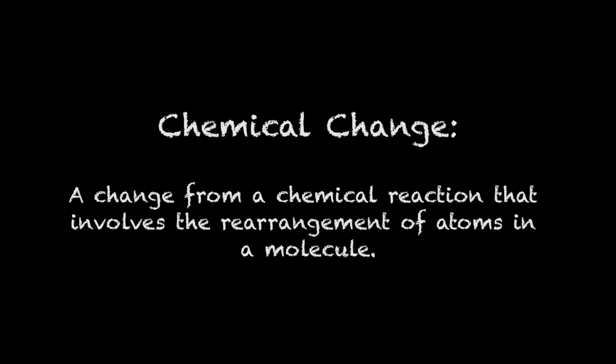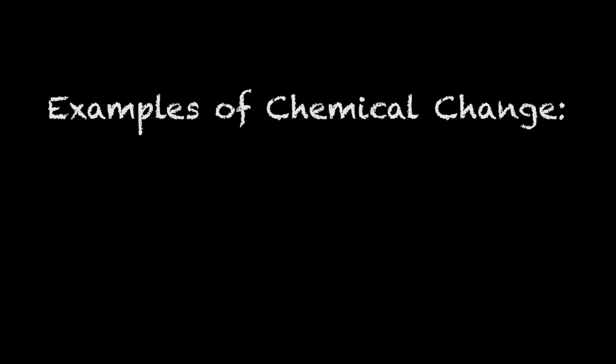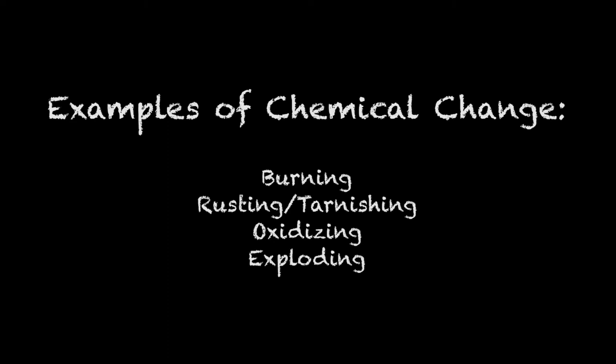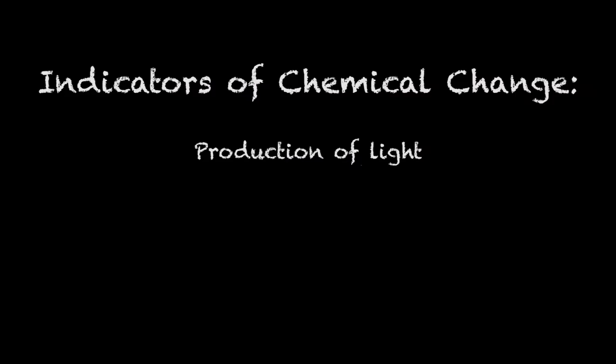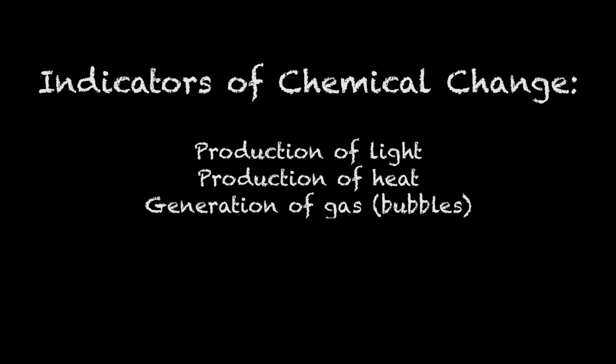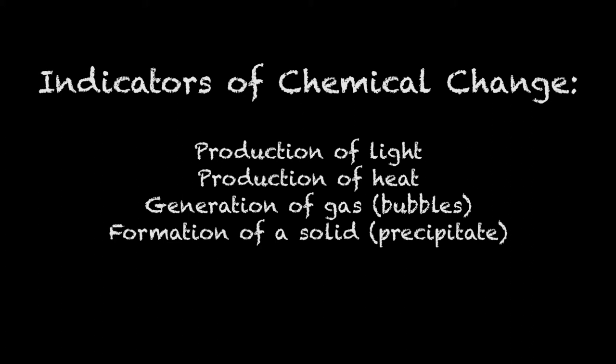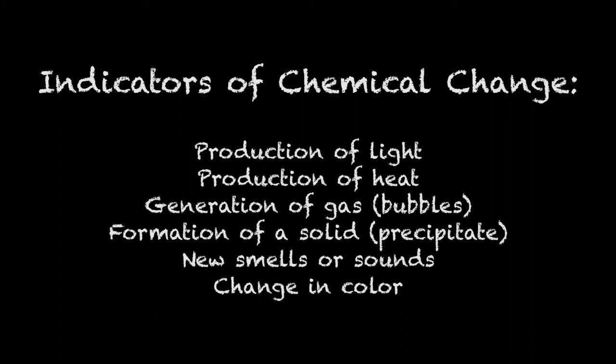A chemical change is a change from a chemical reaction that actually involves the rearrangement of atoms in a molecule. Some examples of a chemical change would be burning, rusting, oxidizing, or even exploding. You can often identify a chemical change by these following indicators: the production of light, the production of heat, generation of gas (which might appear as bubbles in a solution), formation of a solid called a precipitate, or sometimes even production of a new smell or a sound.